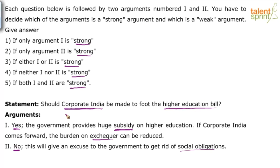So I would say argument 1 is strong and the second one is weak. Of course some may say the second is correct — that it will be an excuse for the government to get rid of social obligations — but that's not really a strong argument. Argument 1 is strong because it claims corporate participation will reduce the burden on the exchequer. So option 1 — only argument 1 is strong — is the answer, and I think most of you agree.